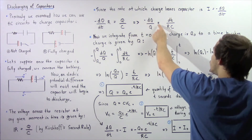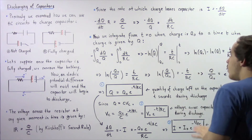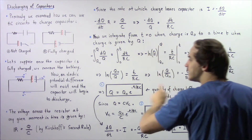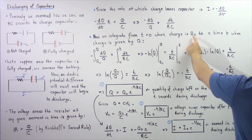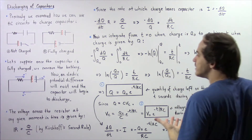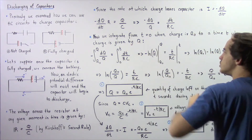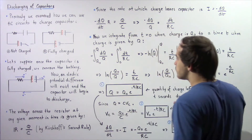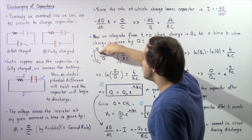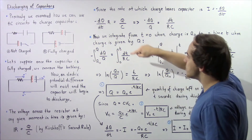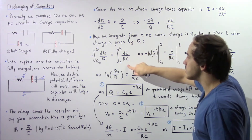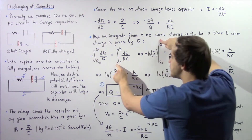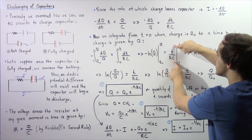Now we want to integrate both sides. We integrate from T = 0, when the charge on the capacitor is Q₀, to a time T when the quantity of charge is Q. So we integrate both sides: the negative of the integral from Q₀ to Q of dQ/Q equals the positive integral from 0 to T of dT/RC. This becomes the negative natural log of Q evaluated from Q₀ to Q, and T/RC evaluated from 0 to T.